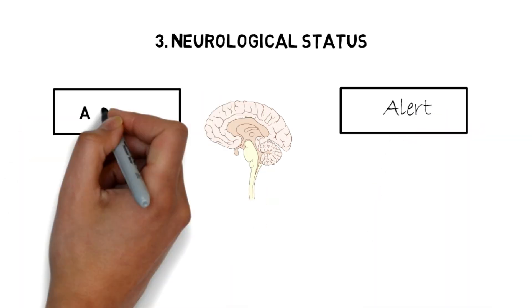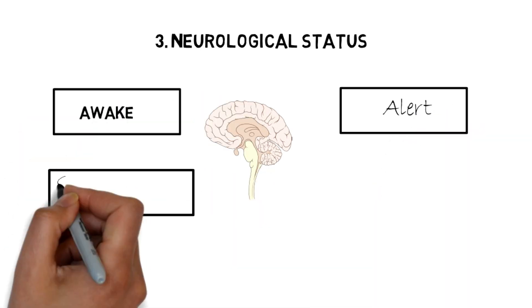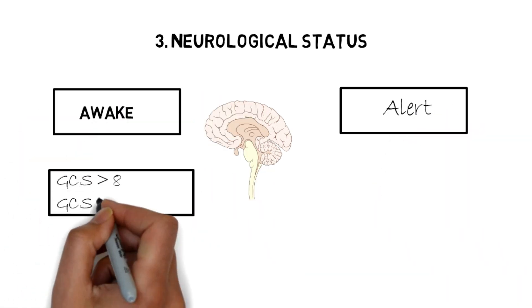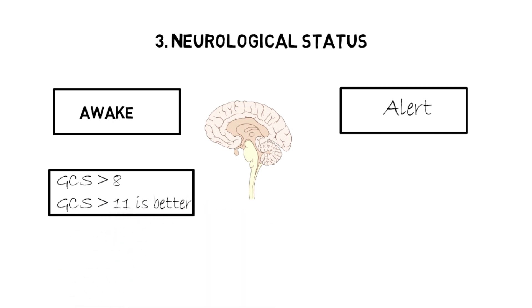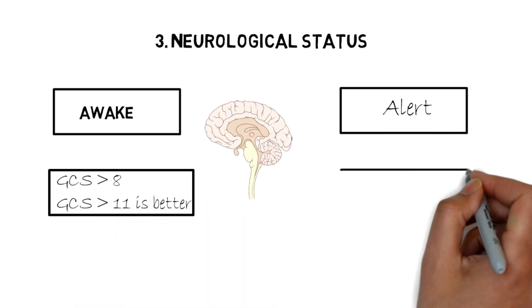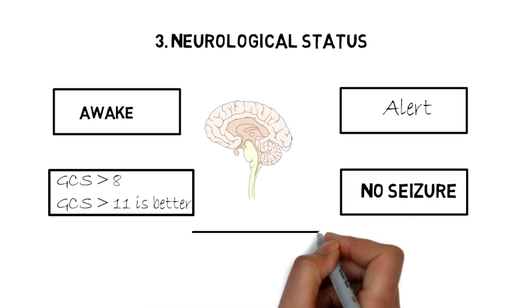Lastly, neurological status. Generally, the patient should be alert and awake with a GCS score more than 8, ideally 11 or higher. There should be no seizure activity, and the patient should be comfortable.